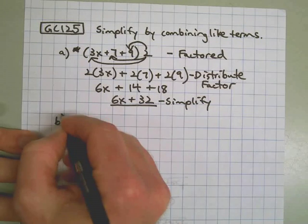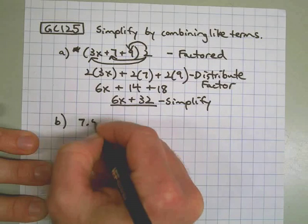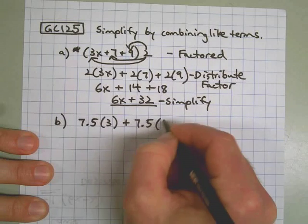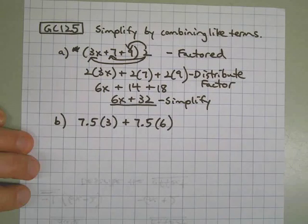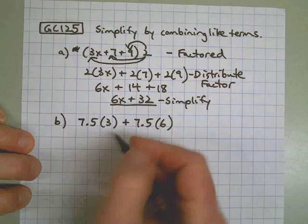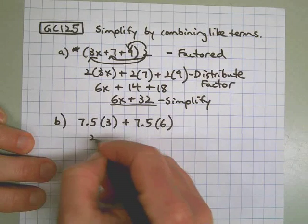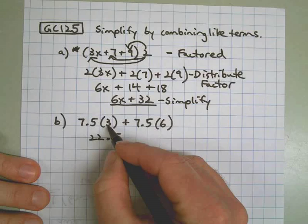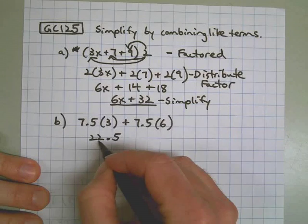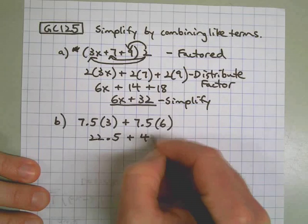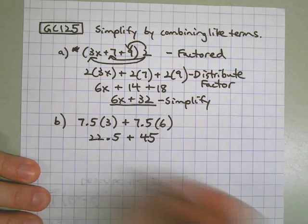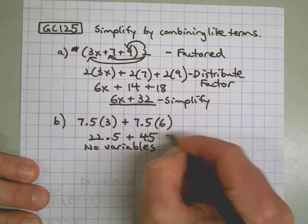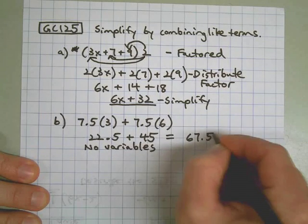Let's do Part B: 7 and 5 tenths times 3, and 7 and 5 tenths times 6. I like this one — there aren't any variables, so I'll actually be able to simplify this and get a number. 7 and a half times 3 is 22 and a half, using a little mental math. Six of them would be twice as many, because 3 times 2 is 6, so 22 and a half times 2 is 45.